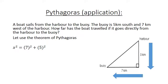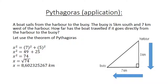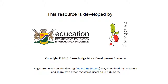x squared equals 7 squared plus 5 squared. x squared equals 49 plus 25. x squared equals 74. x equals the square root of 74. x equals 8.602325267 kilometers. Rounding to one decimal: x equals 8.6 kilometers.